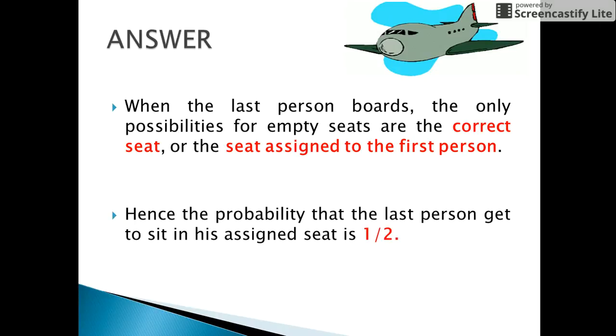So the probability that the last person gets to sit in his assigned seat is 1 by 2, as there are only 2 choices of seats that would be free when he enters the airplane.